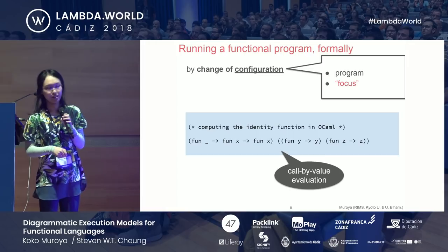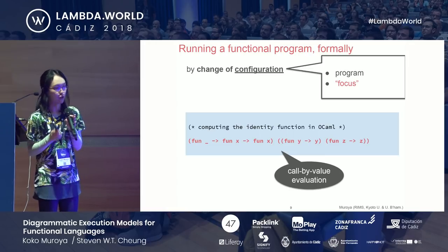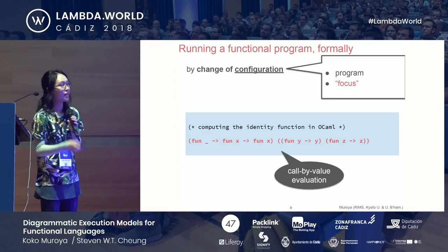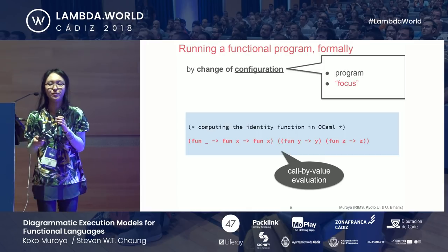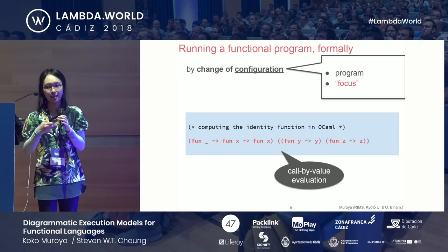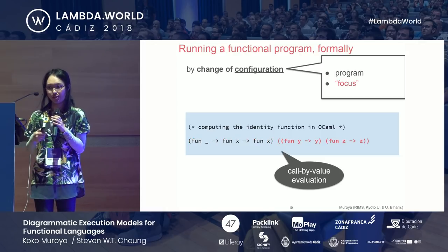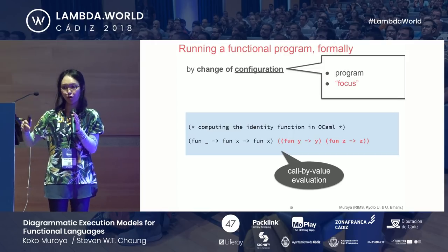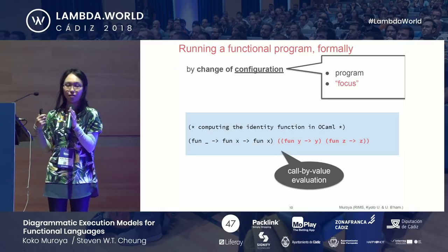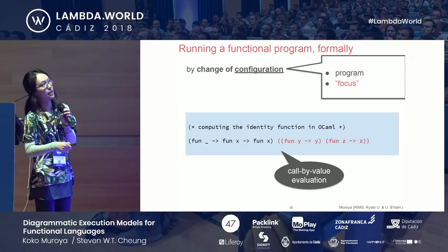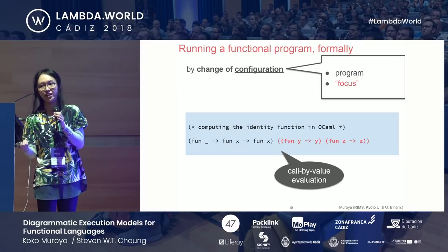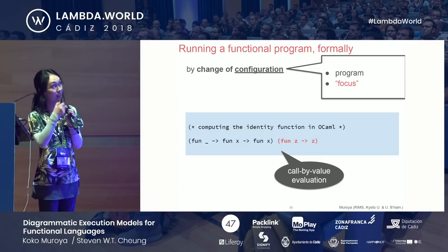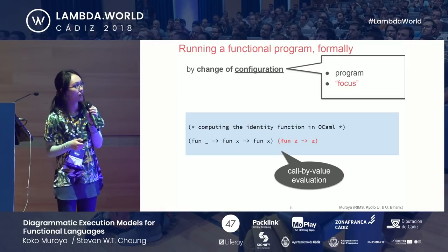In this OCaml function case, the initial configuration is always the focus over the whole program — we start from the whole program. In OCaml we do call-by-value evaluation, so the focus in the next step moves on to the argument, which is not a value yet. From now on, everything we do is limited within the focus — we forget about anything outside it. Here we have a function applied to a value, so we can perform this application and get the identity function that takes x and returns x.